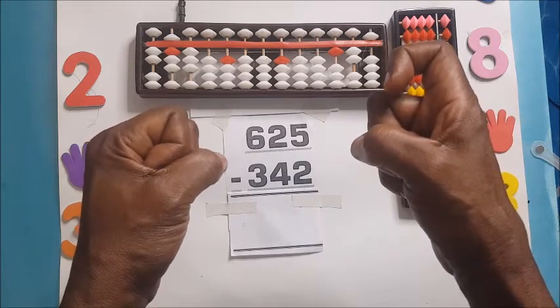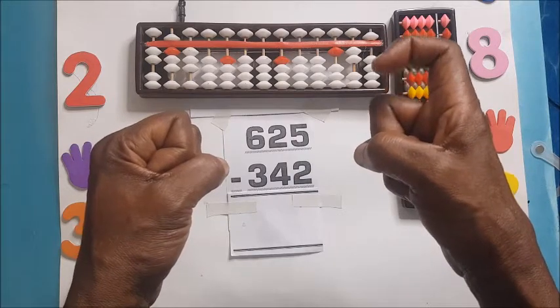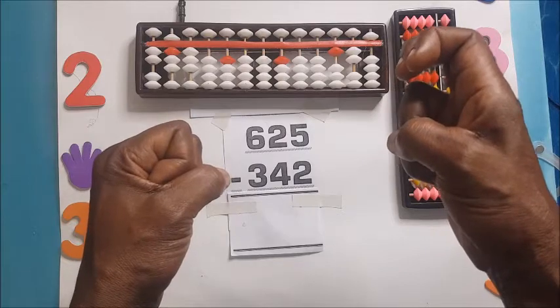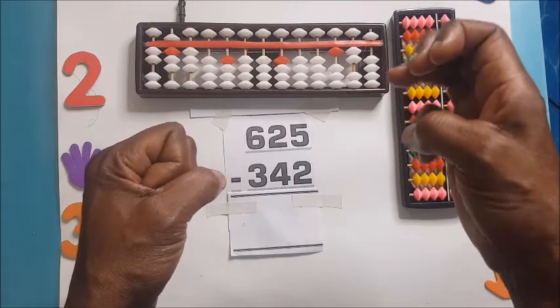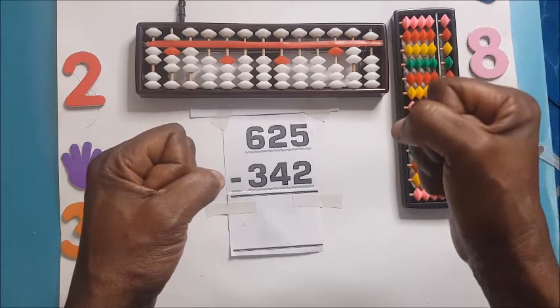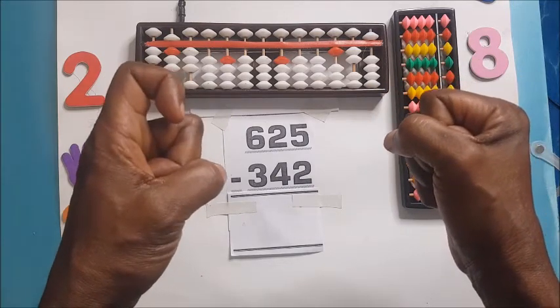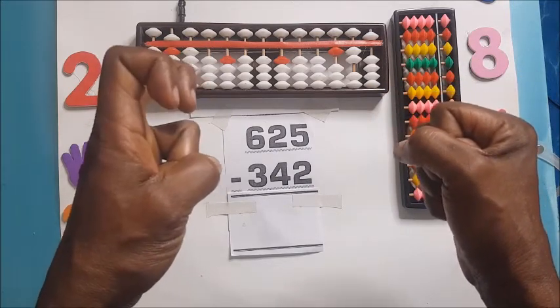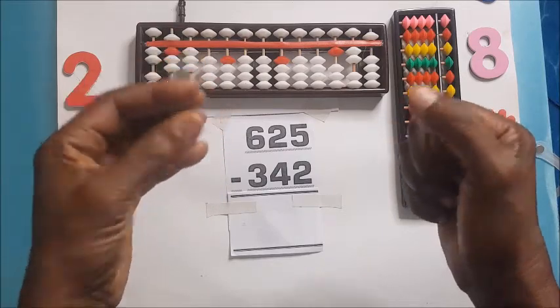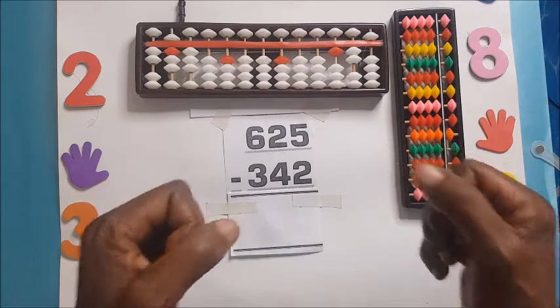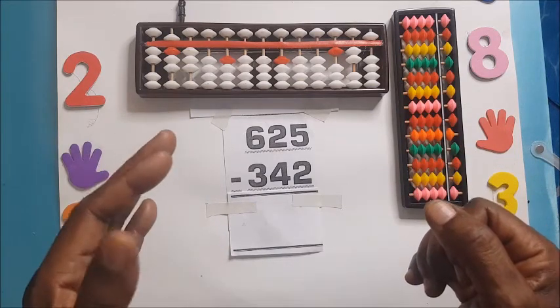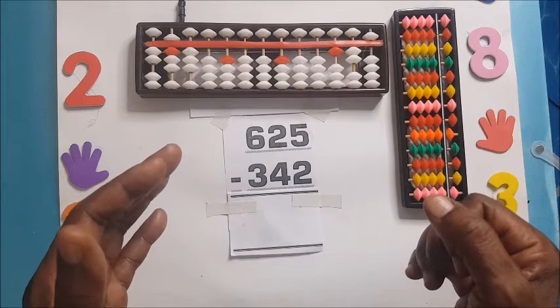But then you have to shoot up the pointing finger and bend it to tell us it's 100 or 200 or 300 and on and on, 900 and 1,000 is this, 2,000, 3,000, the same thing, 9,000 and on and on we go. So today the problem at hand is 625 take away 342.